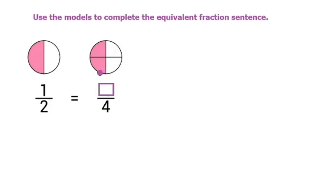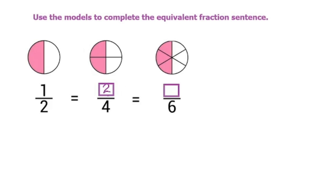We have two colored pieces that are equal parts out of a total of four — one, two, three, four — so we have two out of four colored parts. So we know that's what we have to put there: two out of four.